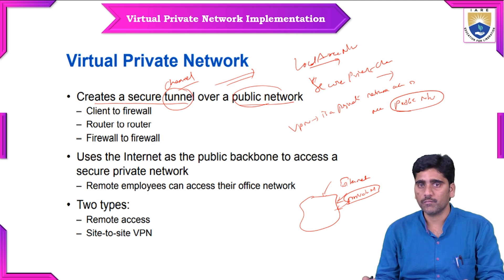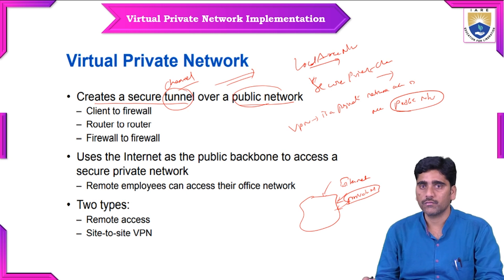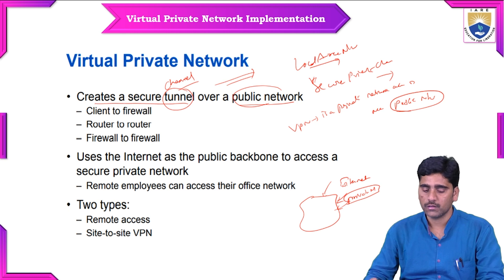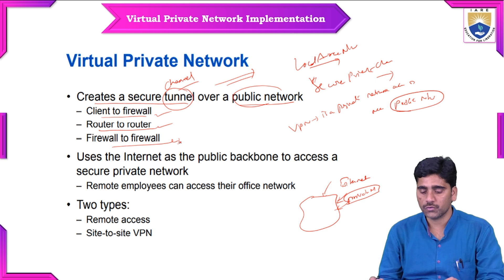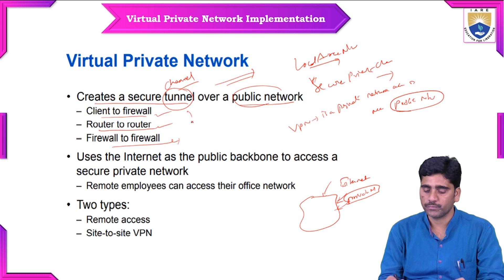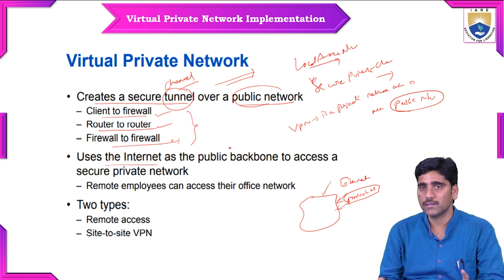This is established between entities like client to firewall, router to router, or firewall to firewall. In this way, they establish a channel to access the public network as a private network. By creating these tunnels, the public network becomes a private network, using the internet as the public backbone to access a secure private network.